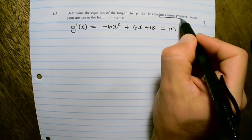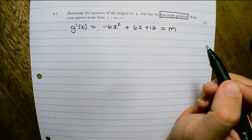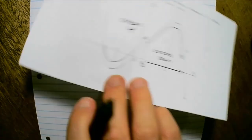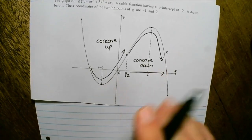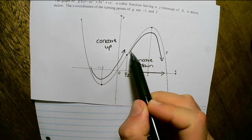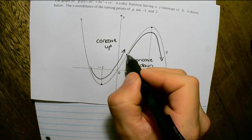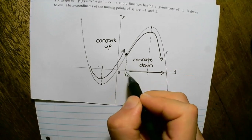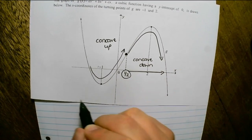Now it speaks about maximum gradient. On the diagram, the maximum gradient would be at the point of inflection. So that means x equals one half.